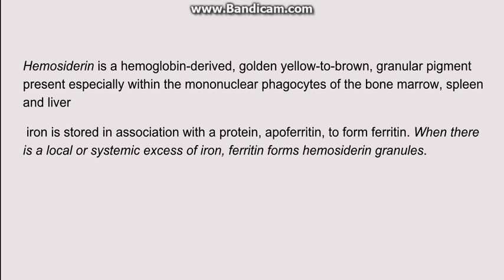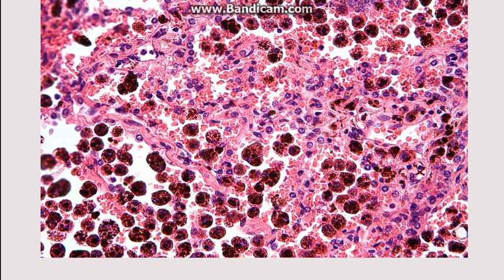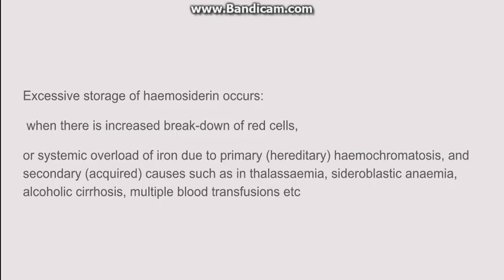When iron is in excess, it is associated with a protein known as apoferritin, forming ferritin. But when there is local or systemic excess of iron, this ferritin tends to form hemosiderin granules. As we can see in this picture, hemosiderin appears as a yellowish to brown pigment present in the mononuclear phagocytic cells of the spleen and liver.